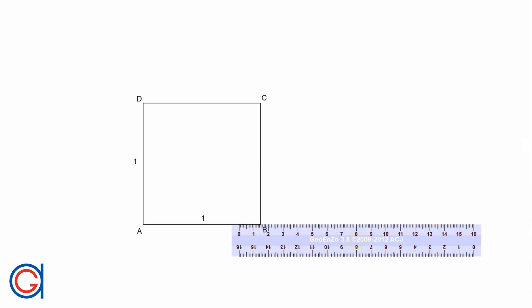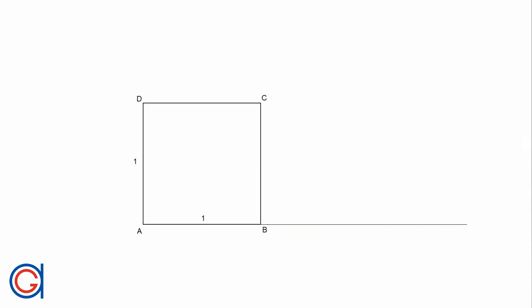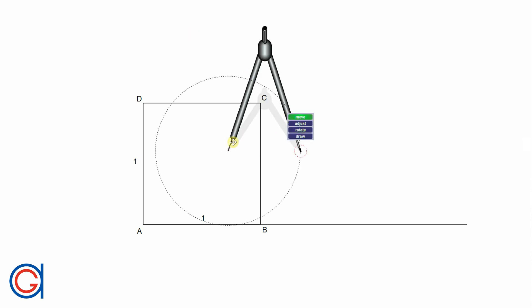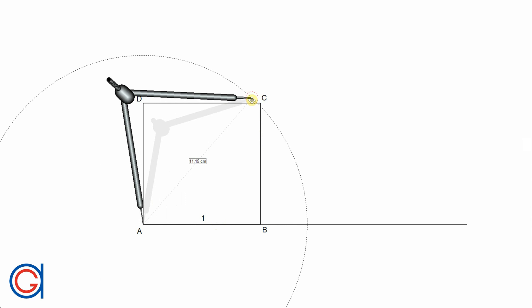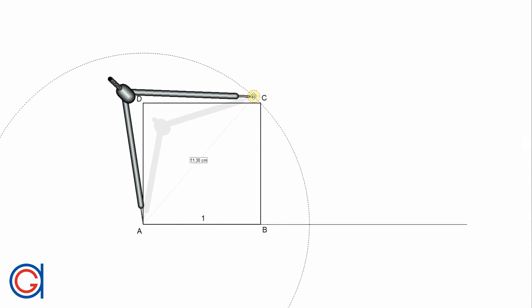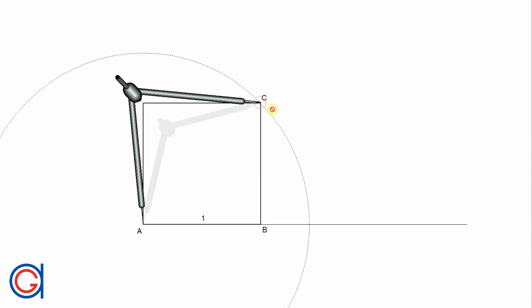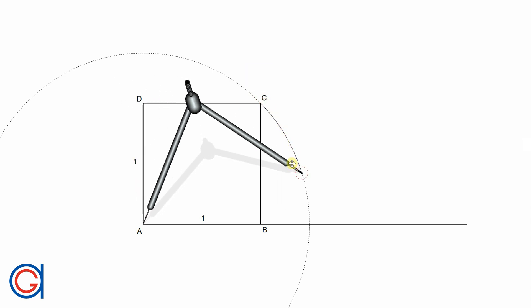So once we have this square ABCD, we start by elongating the bottom side of the square to the right, as can be seen on the screen. Now setting the compass on vertex A and with the radius AC, we are going to describe an arc to the right until it cuts the bottom horizontal line at a new point, which we will call E.